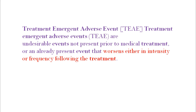Before we start programming, we should know what a treatment emergent AE is. Within the name you can find what it is — it is emergent from the treatment. Treatment emergent adverse events are undesirable events not present prior to the medical treatment, or an already present event that worsened either in intensity or frequency following that treatment. After taking the study medication, if the subject has any adverse event occurring during treatment, we can call it a treatment emergent AE.